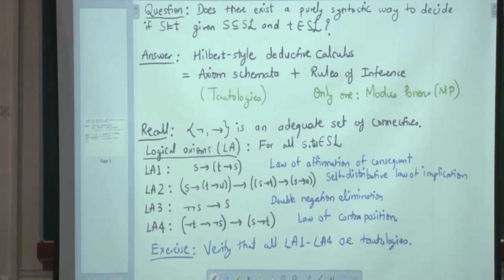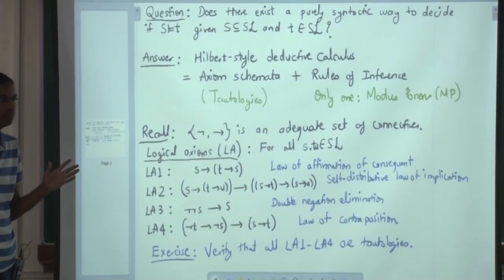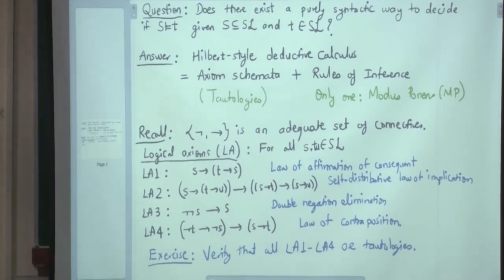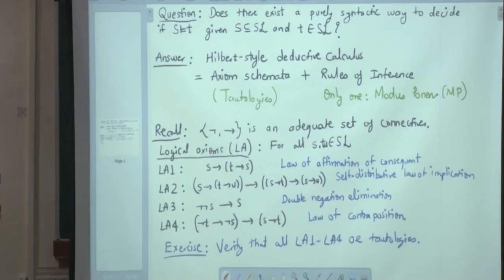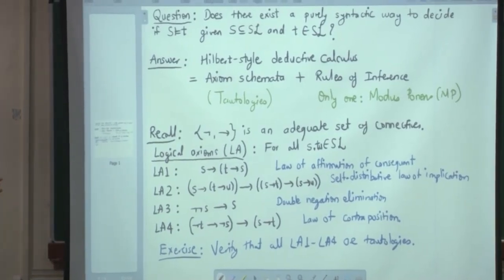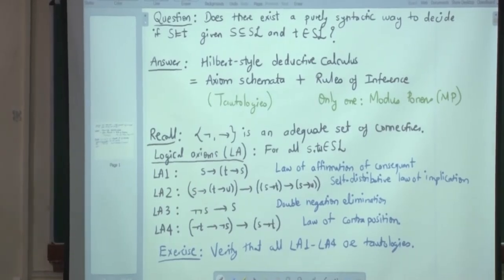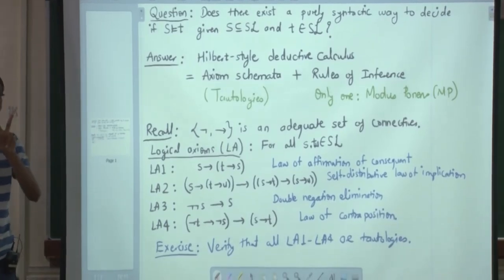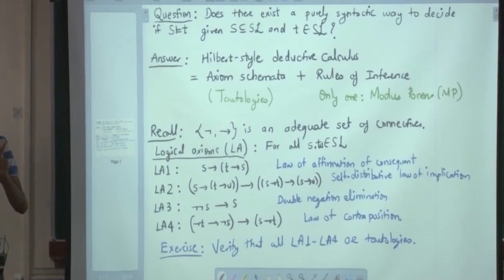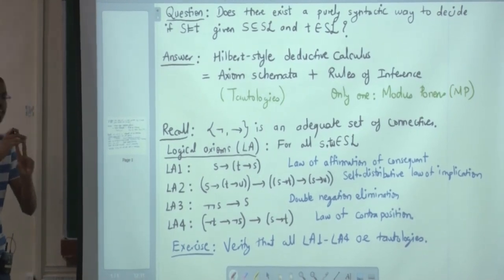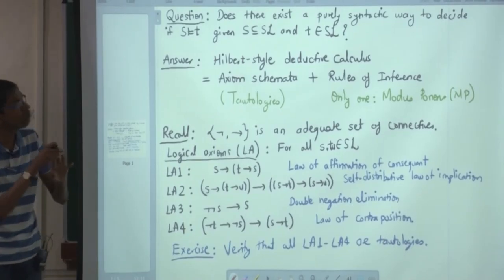The only rule is modus ponens. But how do we use these things? Once we have these ingredients, we are going to use induction to construct a formal proof. In that induction there will be two basic steps — two base cases. First one is a logical axiom, the second one is a non-logical axiom. And the only inductive step is the rule of inference: modus ponens.